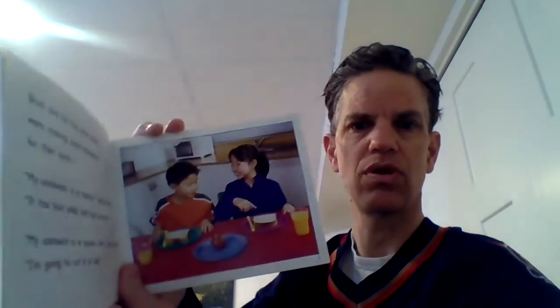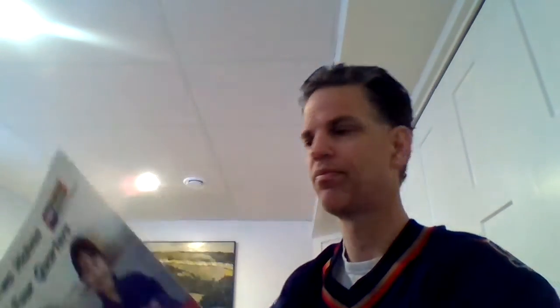Brad and his big sister Christy were making some sandwiches for lunch. My sandwich is a square, said Christy. It has four sides and four corners. My sandwich is a square too, said Brad. I'm going to cut it in half. I've made two smaller sandwiches, said Brad. But they are not squares — they are rectangles.